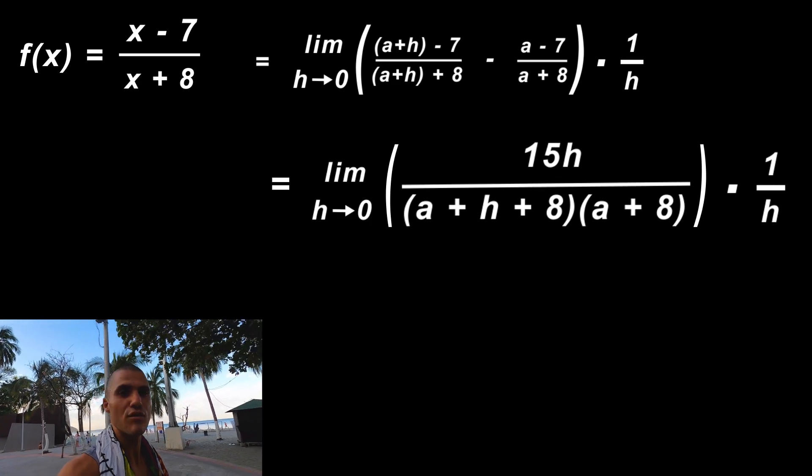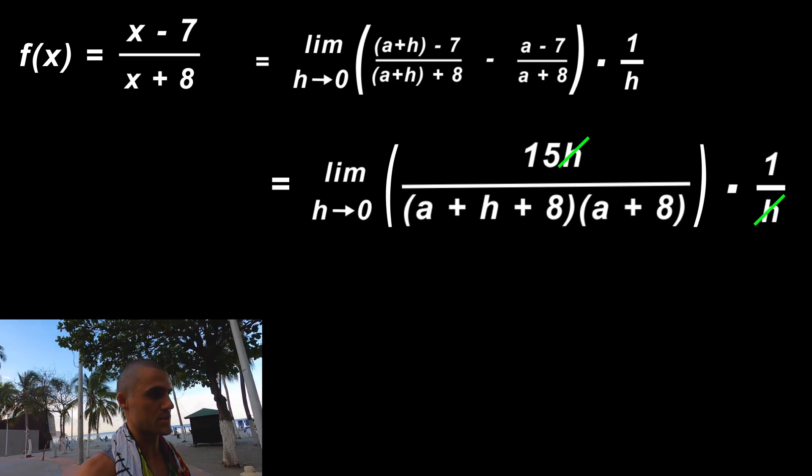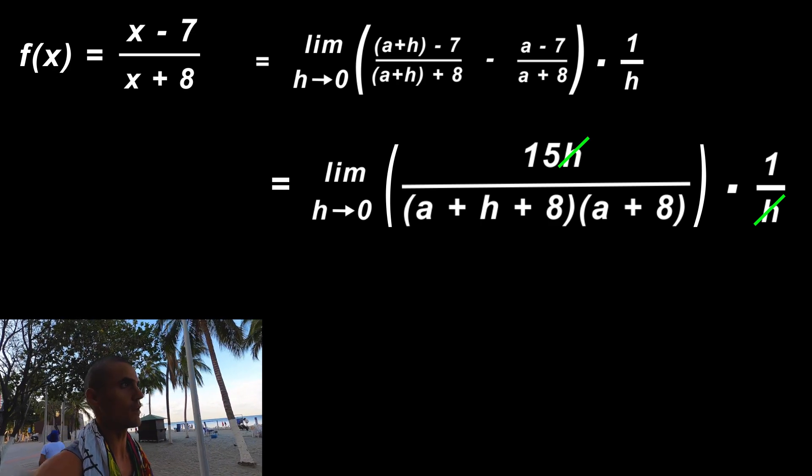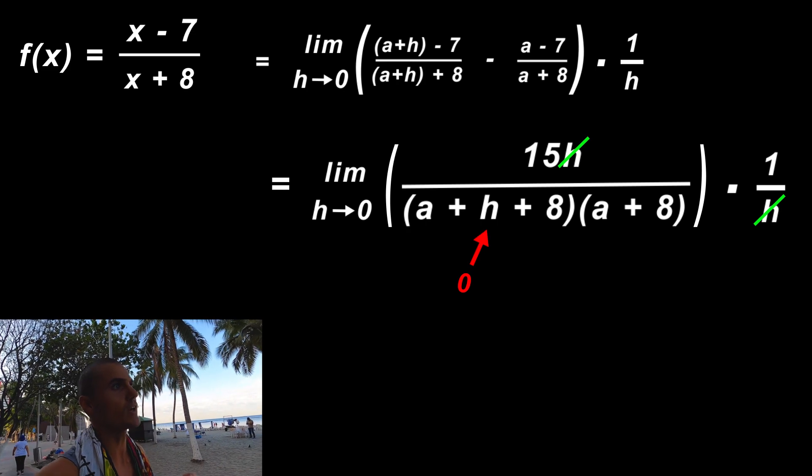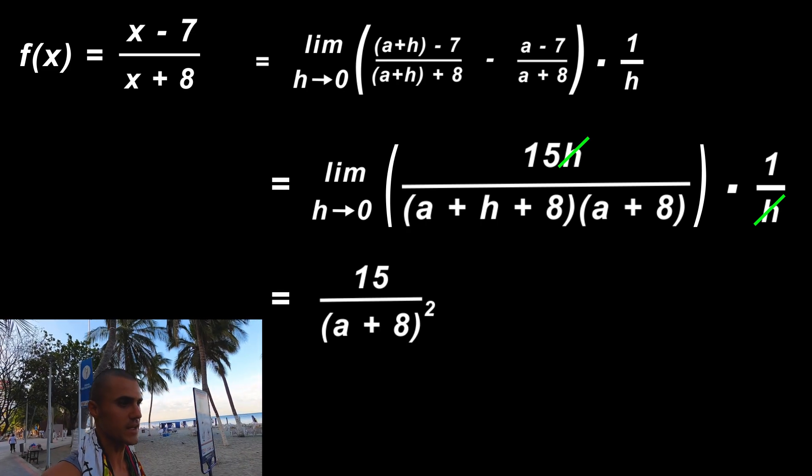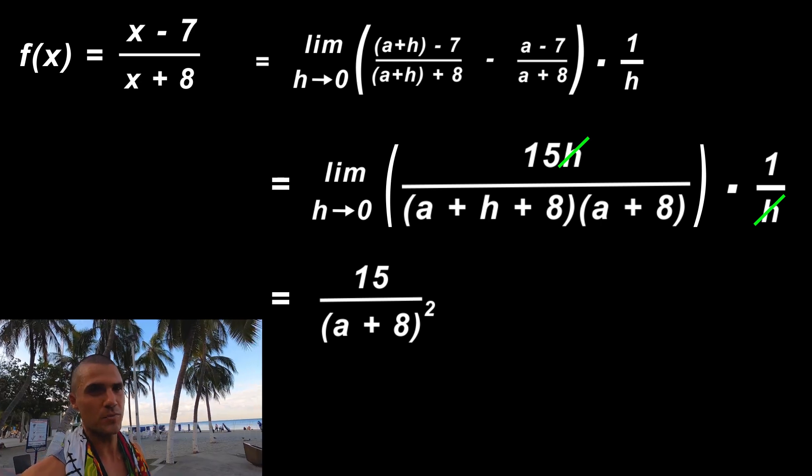Notice now it's obvious to see the h's are going to cancel out. Remember our goal is always to get rid of that h in the denominator of the difference quotient. You could plug in zero for any remaining h's and you'd end up with 15/(a+8)². Just pulling up on the gym here, this is how it looks like.